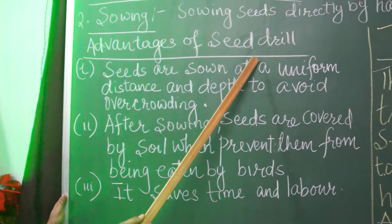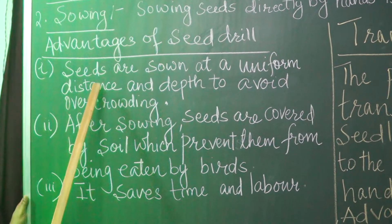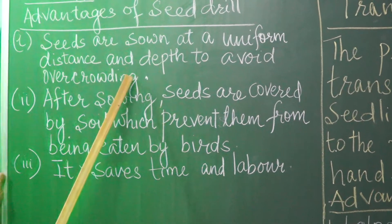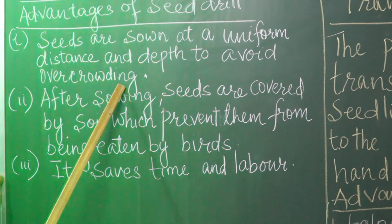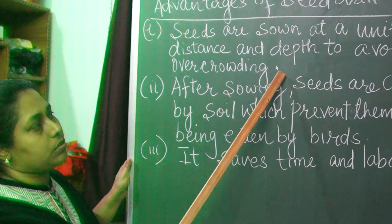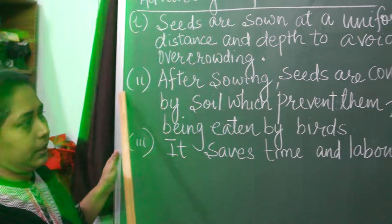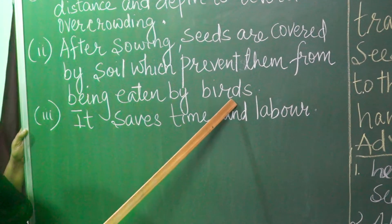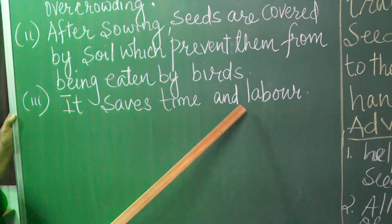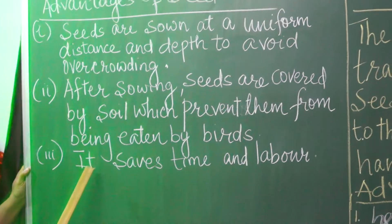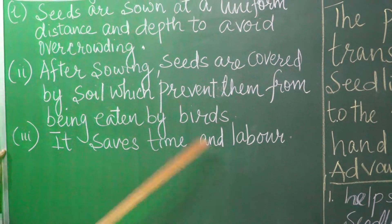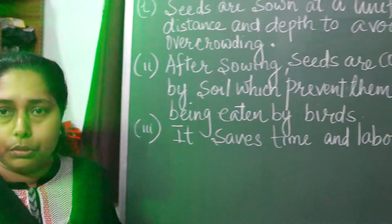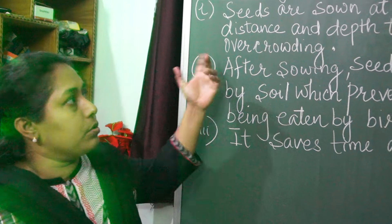These are the advantages of the seed drill. First: seeds are sown at a uniform distance and depth to avoid overcrowding, so that the seeds will get proper sunlight, water, nutrients, and can germinate easily and properly. Second: the seeds are covered by soil, which prevents them from being eaten by birds. Third: it saves time and labor because it is attached to the tractor. Sowing is mainly done by two methods — either manually or by using a seed drill.